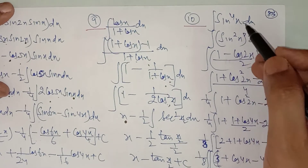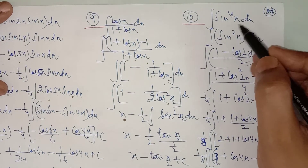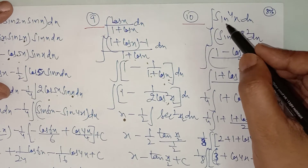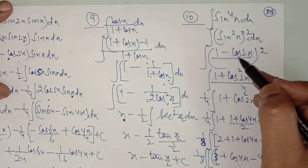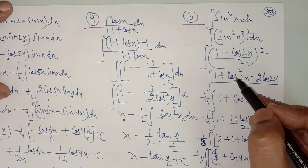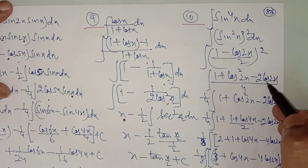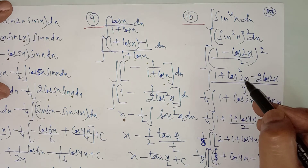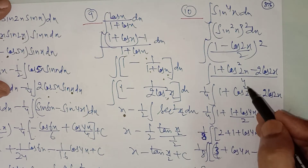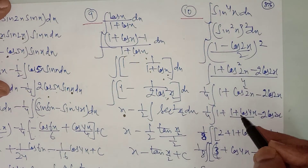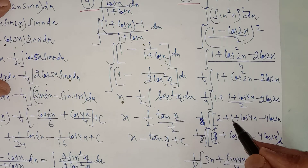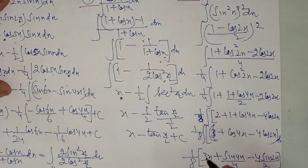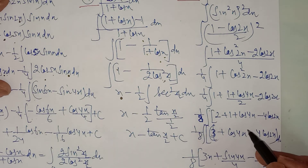Now sin⁴x — be very careful, there is a lot of manipulation. Write sin⁴x = (sin²x)². For sin²x write (1 - cos 2x)/2. Do the whole square: it is (1/4)(1 - cos 2x)² = (1/4)(1 - 2cos 2x + cos²2x). For cos²2x use (1 + cos 4x)/2. Taking 1/4 common, simplify to (1/8)(3 - 4cos 2x + cos 4x) after combining terms. The integral of 3 is 3x; the integral of cos 4x is sin 4x/4; and integrate cos 2x accordingly.